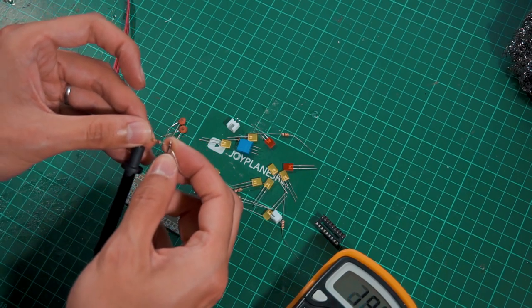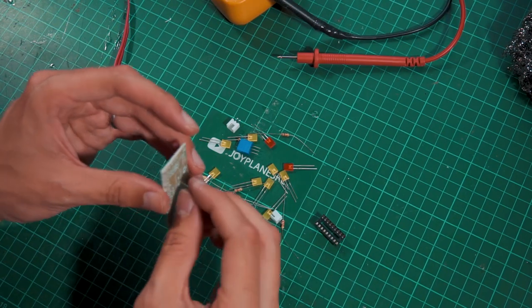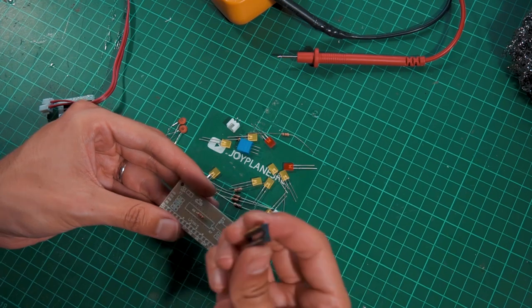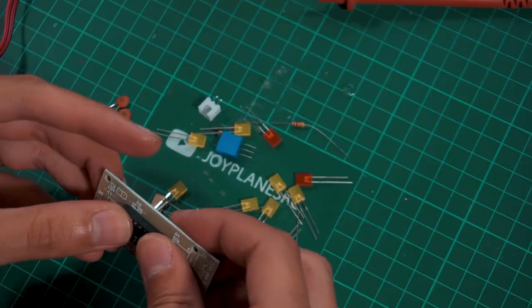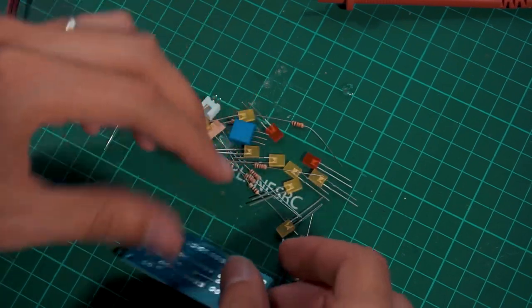So I start measuring all the resistors to make sure they are going to be on the right place. I just check the value with my multimeter and then put them in the PCB spot where they're supposed to be.